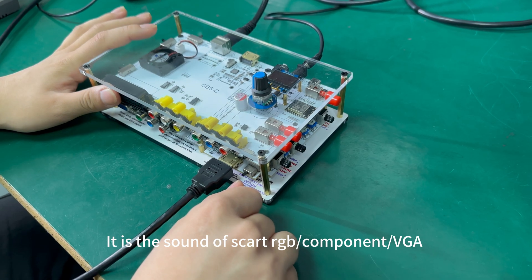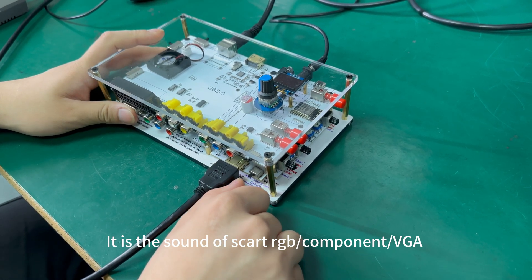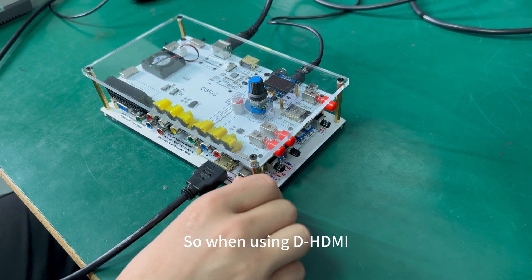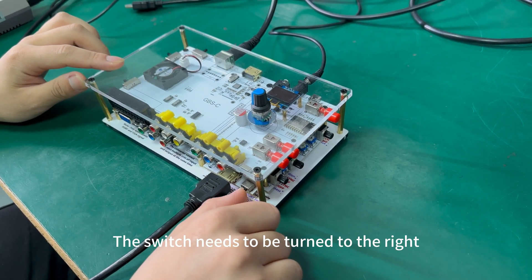If you hit to the left, it is the sound for RGB component, BGA. So when using the HDMI, the switch needs to be turned to the right.